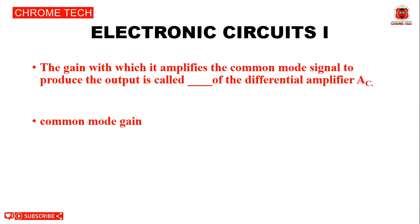Next question: The gain with which the amplifier amplifies the common mode signal to produce the output is called dash of the differential amplifier, AC. The answer is common mode gain.